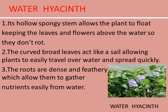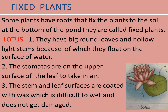Water hyacinth: its hollow, spongy stem allows the plant to float, keeping the leaves and flowers above the water so they don't rot. The curved, broad leaves act like a sail, allowing plants to easily travel over water and spread quickly. The roots are dense and feathery, which allows them to gather nutrients easily from the water.